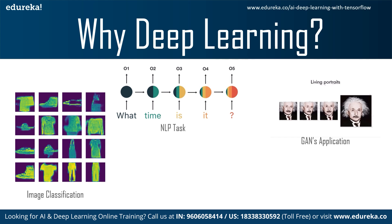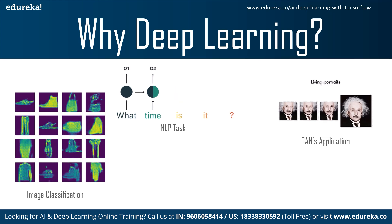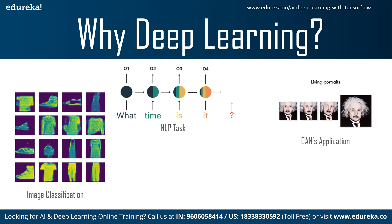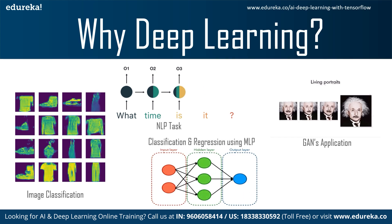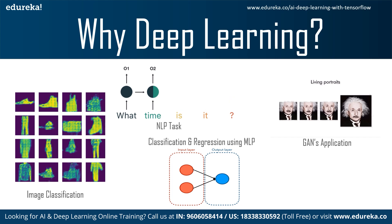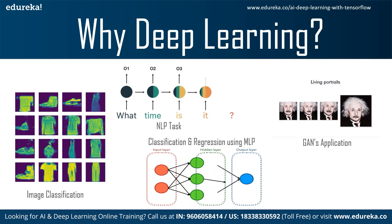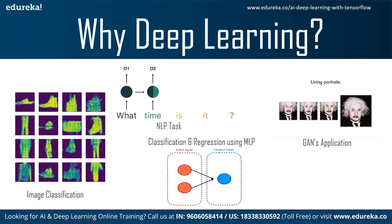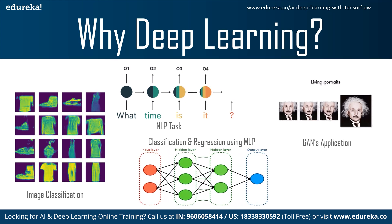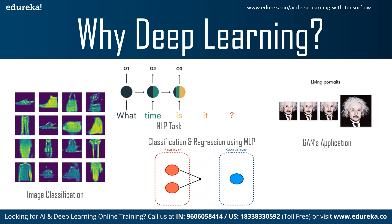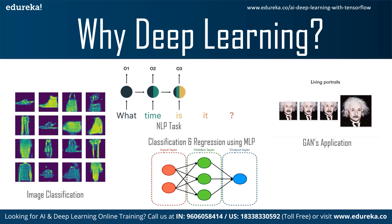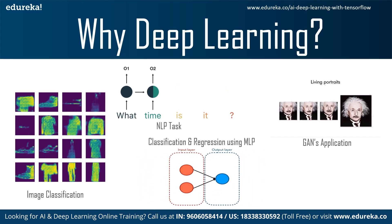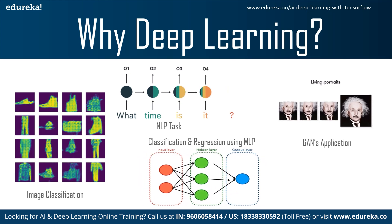Moving on, GANs — Generative Adversarial Networks — are an unsupervised part of deep learning; common applications include deep fakes and more. Finally, we have classification and regression tasks using multi-layer perceptrons. In machine learning we had algorithms like decision trees, random forests, linear regression, or logistic regression, but when performing classification using MLP we get very high accuracy, even compared to SVMs and decision trees.